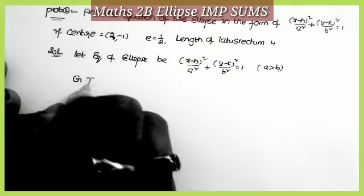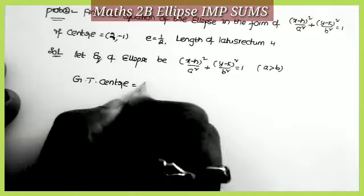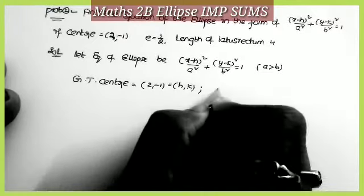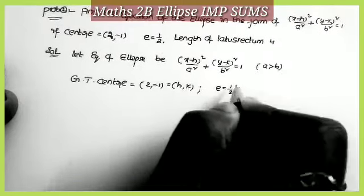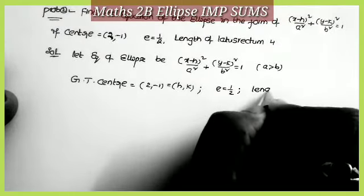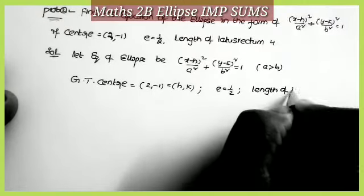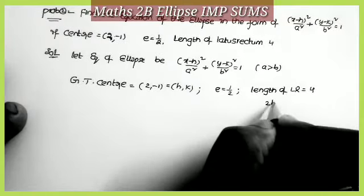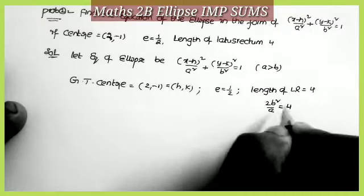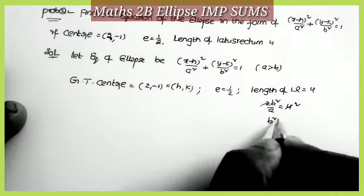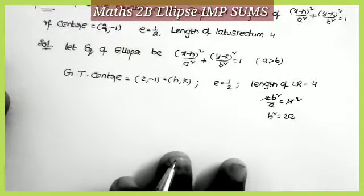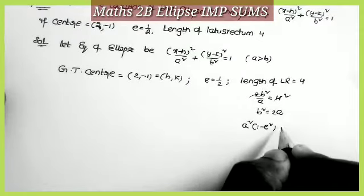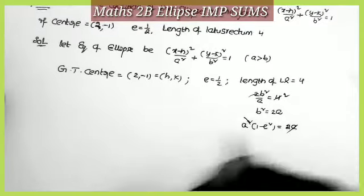Given: center = (2, −1), so h = 2 and k = −1. Eccentricity e = 1/2. Length of latus rectum = 4. In the case a > b, the formula for the length of the latus rectum is 2b²/a = 4, which gives b² = 2a. Also, the formula for b² in this case is b² = a²(1 − e²), so a²(1 − e²) = 2a.